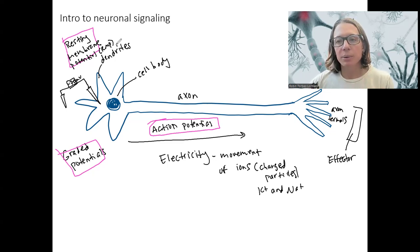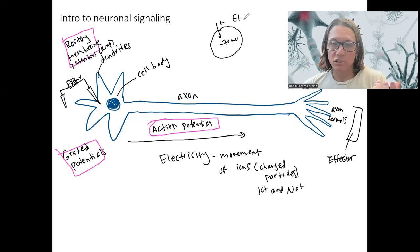That's causing an electrical gradient where positive things have a drive into the cell. And negative things have a drive out of the cell. It's a reminder of electrical gradients.